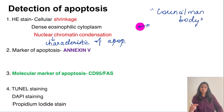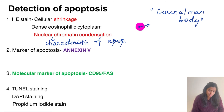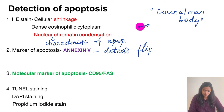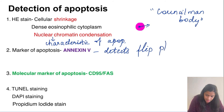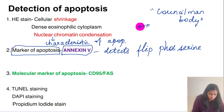We also saw the image of the Councilman body seen in viral hepatitis — this is nothing but an apoptotic body. For detection of apoptosis, Annexin V is used. Annexin V detects the flipping of phosphatidylserine from the inner to the outer membrane of the apoptotic body. Annexin V is the marker of apoptosis.